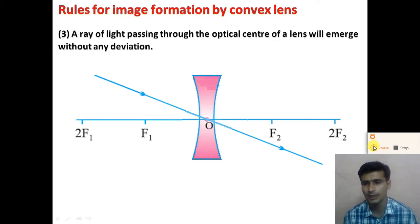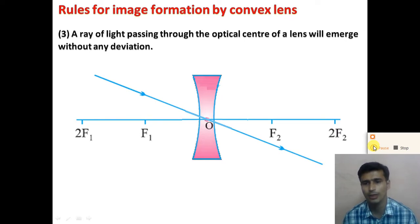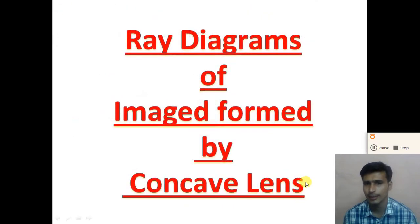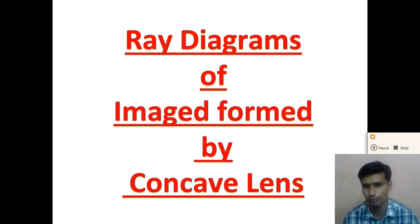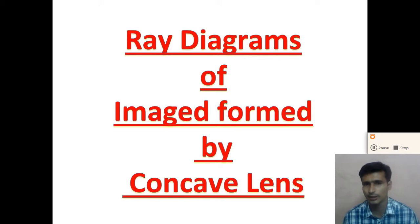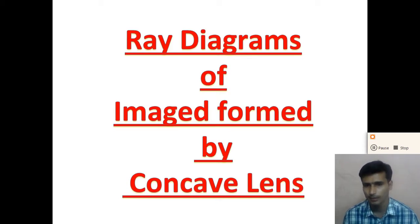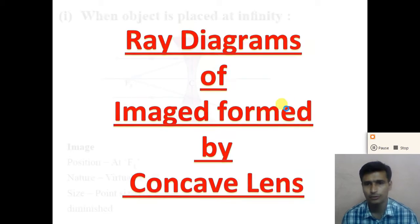Now, with the help of these rules for making a ray diagram by a concave lens, we will understand how the image is formed by the concave lens. We use a minimum of two rules out of these three to draw a ray diagram and form an image by a concave lens for various positions of the object. Let us discuss how the image is formed by the concave lens for different positions of the object with the help of ray diagrams.